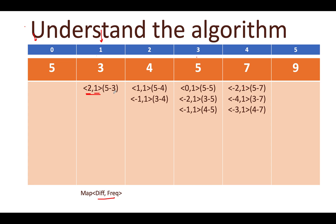For i=2 and j=0: a[j] - a[i] = 5 - 4 = 1, a fresh entry — add (1, freq=1) to the map at index 2. Moving j to 1: 3 - 4 = -1, also fresh — add (-1, freq=1) to the map at index 2. We continue building maps for each index.